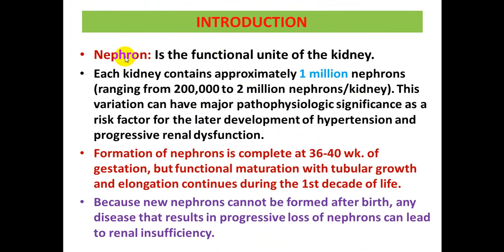The nephron is the functional unit of the kidney, and each kidney contains about 1 million nephrons. This number ranges from 200,000 to 2 million nephrons per kidney. This variation in the number of nephrons plays an important role in the development of hypertension and progressive renal dysfunction.